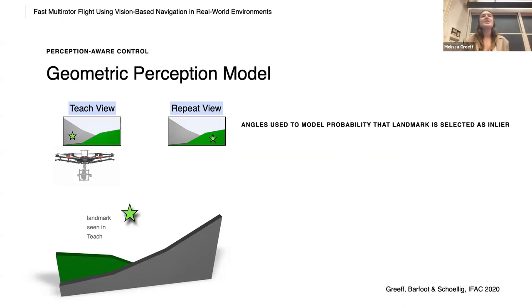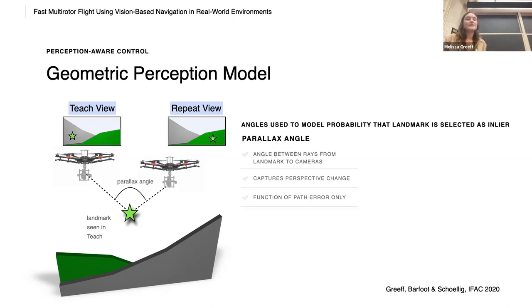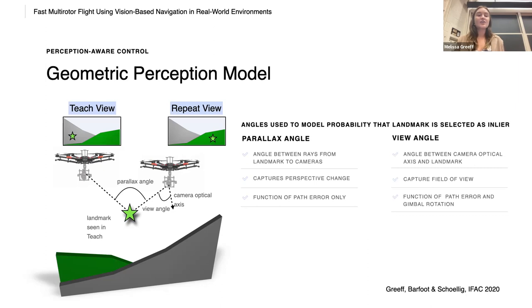So to do this, we first develop a geometric perception model. Imagine that the green star represents the landmarks seen in TEACH. When we repeat, we have some error with TEACH. So we use two angles in our model. The first is the parallax angle, and this is the angle between the rays from the landmark to the cameras. It captures the perspective change and is a function of only the path error. The second angle is the view angle. It is the angle between the current camera optical axis and the landmark. It captures the field of view. And it is a function of the path error and gimbal rotation.